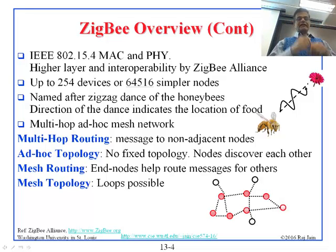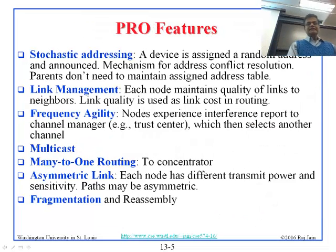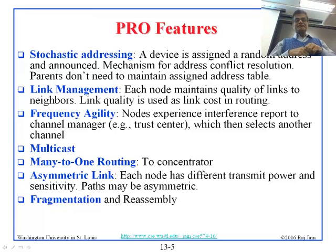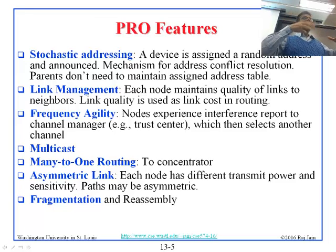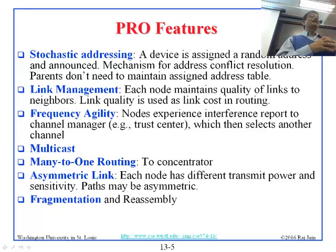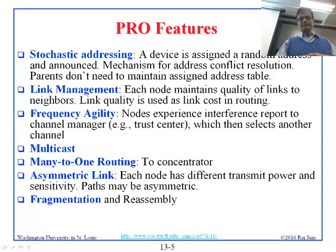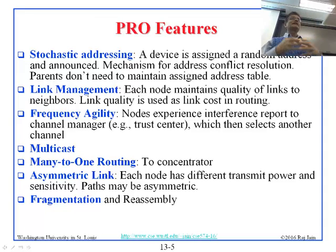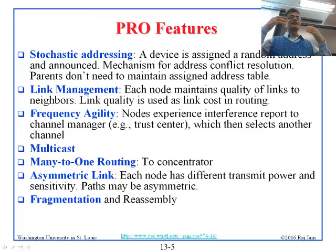Stochastic addressing is one of the new ZigBee features. Previously, each node would be assigned a sequential number as its nickname — 1, 2, 3, 4, etc. — but there were problems with that approach. Now with stochastic addressing, each node draws a random number and that becomes its name. One problem with random number generation is that two nodes might draw the same number. So there needs to be a mechanism for address conflict resolution.